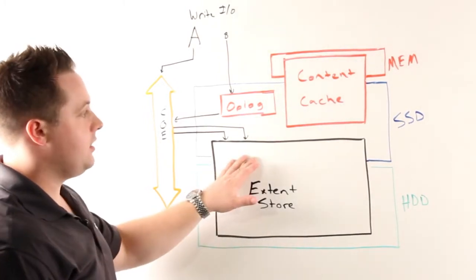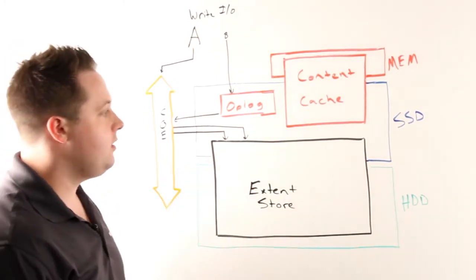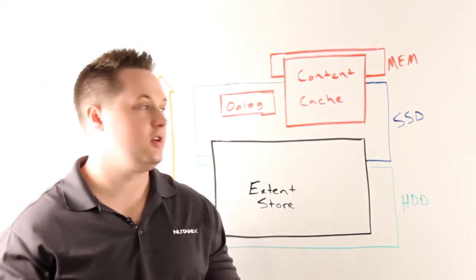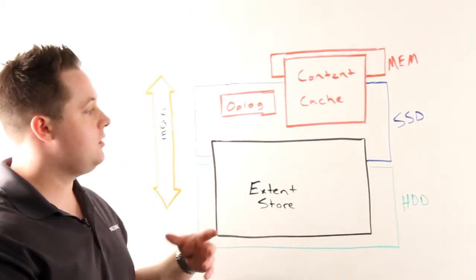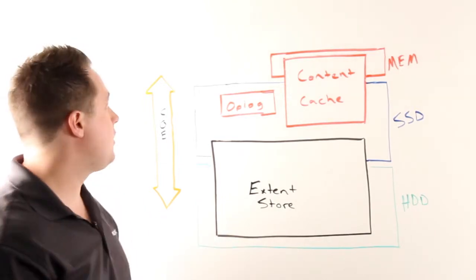So that handles inline compression. Next, we'll talk about post-process. For post-process compression, the traditional Nutanix non-compressed I/O path is followed.